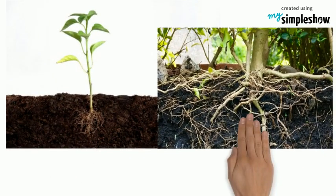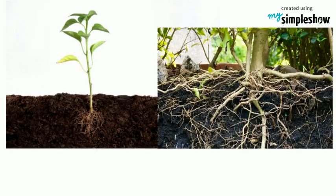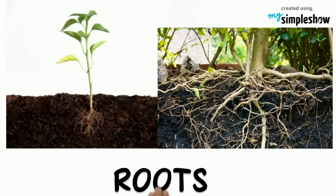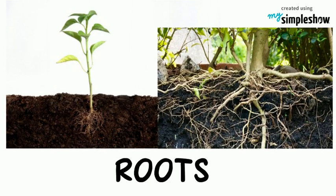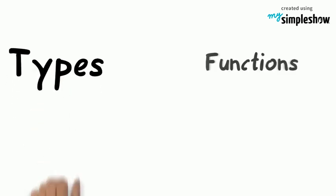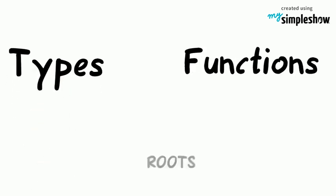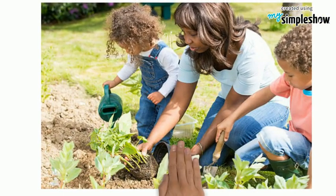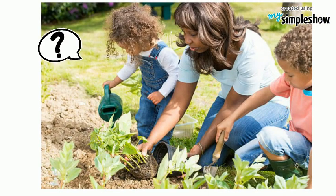Plants of different parts. One of the most important parts of a plant is the part you can't see — the roots. Let us talk about the types and functions of roots. Did you ever wonder what makes a plant stand? That's right. It's the part of the plant that is usually underground — the roots.